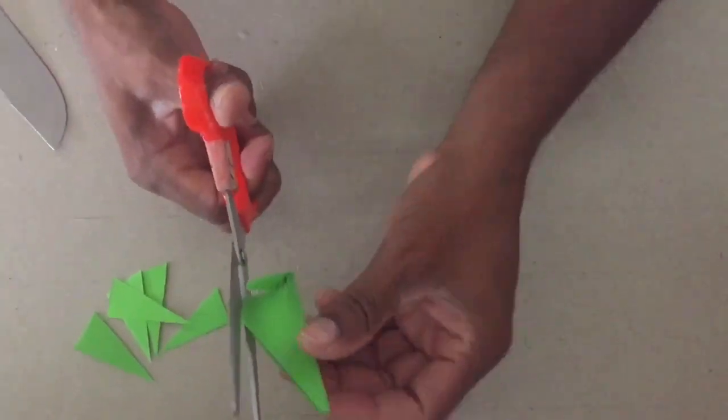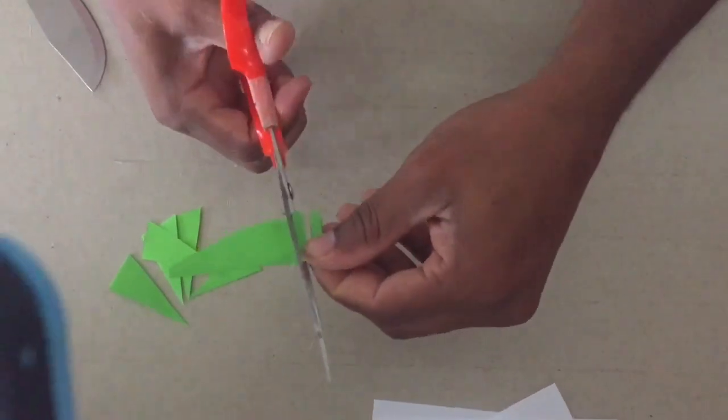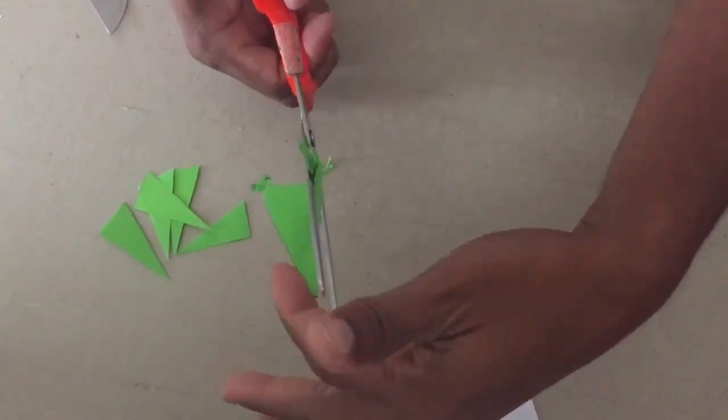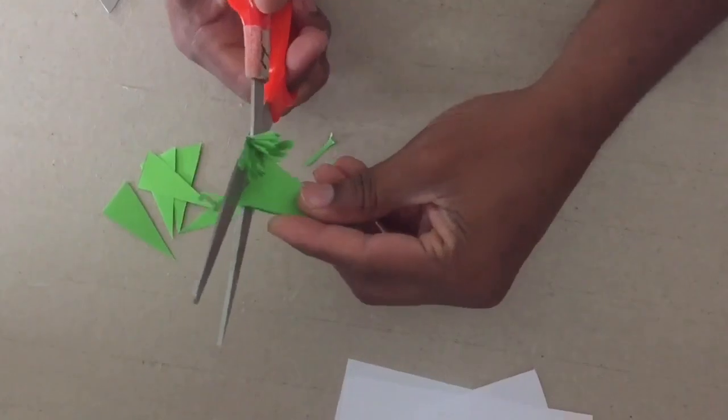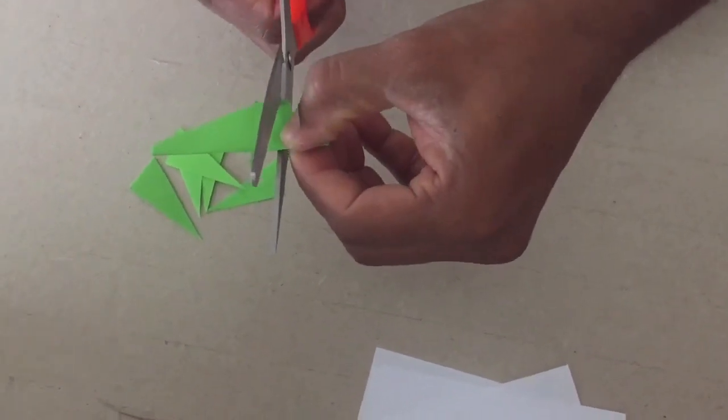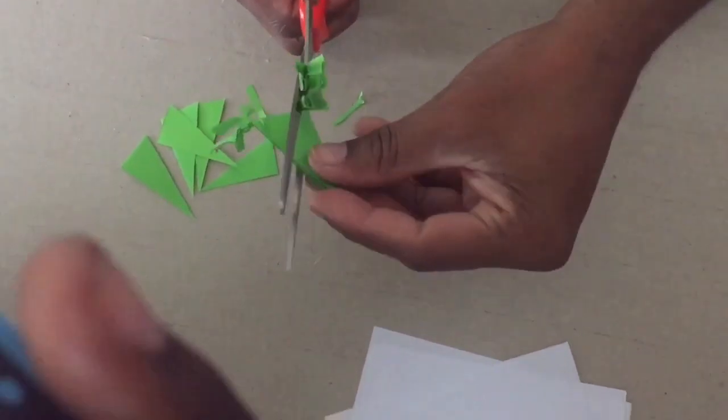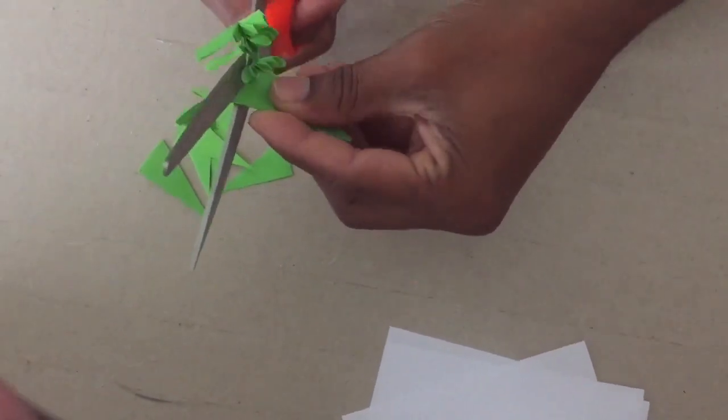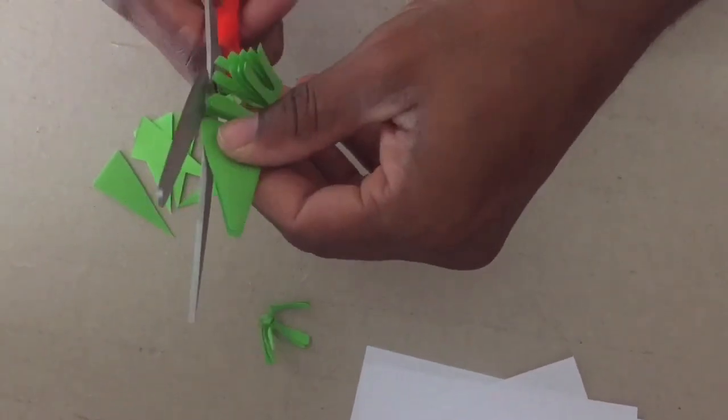So we rotate the scissors up and down, creating wavy lines to cut the fern leaves. These are special types of leaves, and we are using wavy lines to design them.